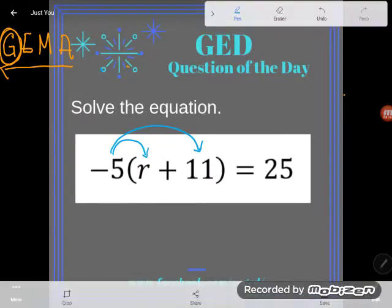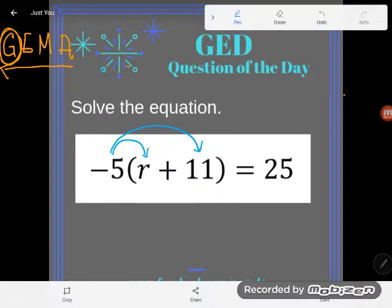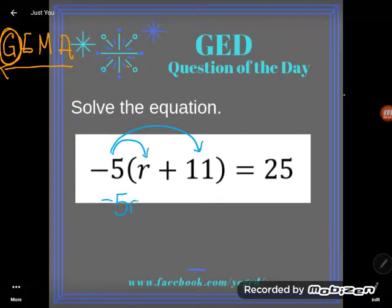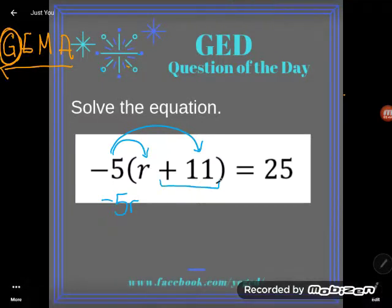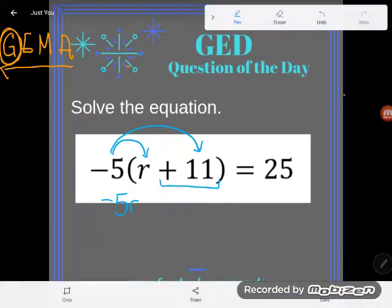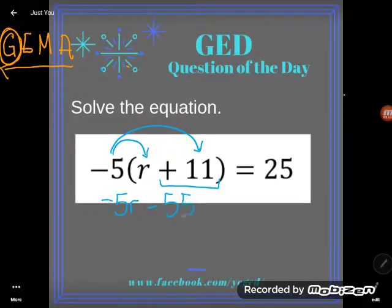Remember, multiplication passes out over parentheses. So negative five times r is negative five r. And negative five times positive 11 - you might think, why is she reading it as positive 11 when that's a plus 11? Well, right now I'm multiplying, so I'm going to read it as a positive 11. I get negative 55, and of course that's still equal to this right hand side, 25.